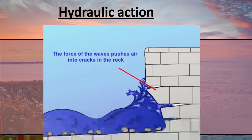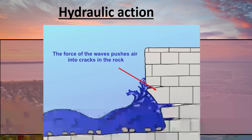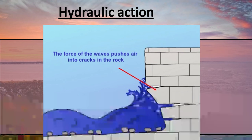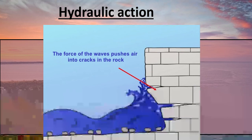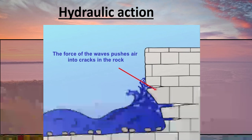The first process of erosion we're going to look at is hydraulic action. Hydro meaning water, so it's the water doing the action here. As the sea crashes into the rock or cliff, the cracks in the rock have air in them. The sea then pushes that air further and deeper into the rock, making it wider and deeper. If this keeps happening over and over again, eventually the crack gets wider and wider until parts of the rock break away.